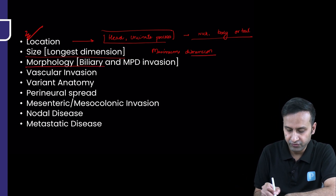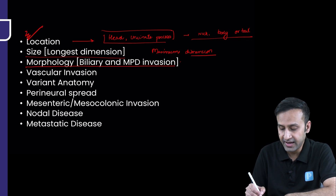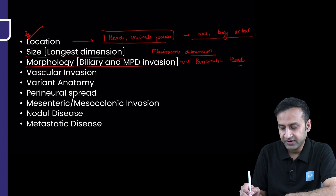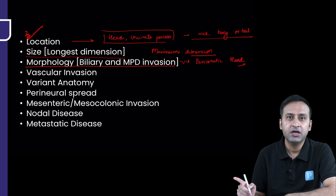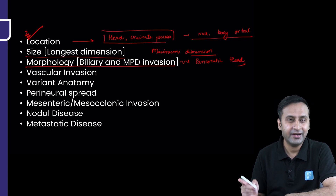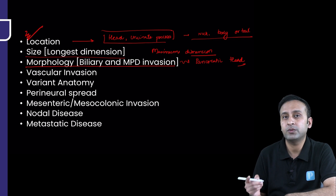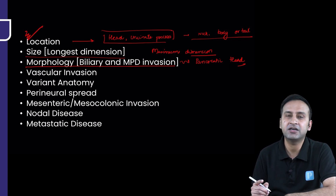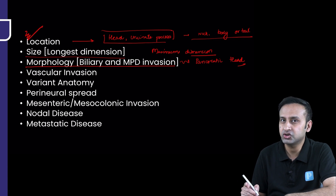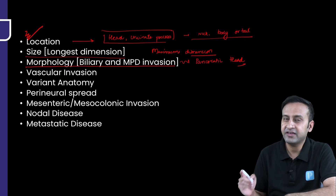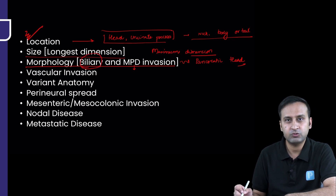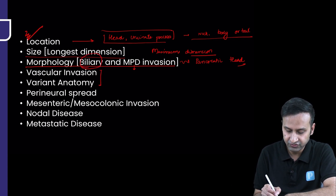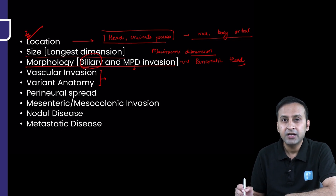Third: morphology — specific for pancreatic malignancy and even more so for pancreatic head tumors, because the pancreatic head is closely related to the terminal main pancreatic duct and CBD. Majority of cases involving the pancreatic head or uncinate process will eventually cause invasion of the MPD and terminal CBD, resulting in obstructive biliopathy and MPD dilatation. In the previous case, we had a dilated MPD while the biliary channels were somehow spared.